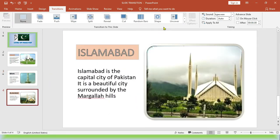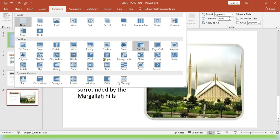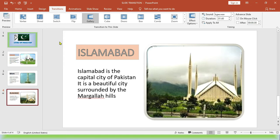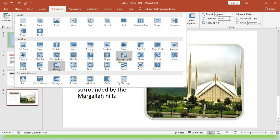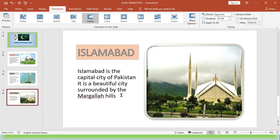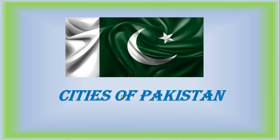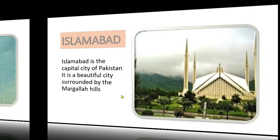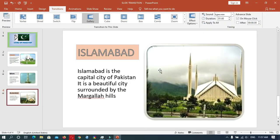And on the fourth slide, Gallery. So you can apply any transition to your slides. In the professional way we apply one transition effect to our whole slides. Now press F5 to run the presentation, and here you can see that different transition effects are applied on our different slides.